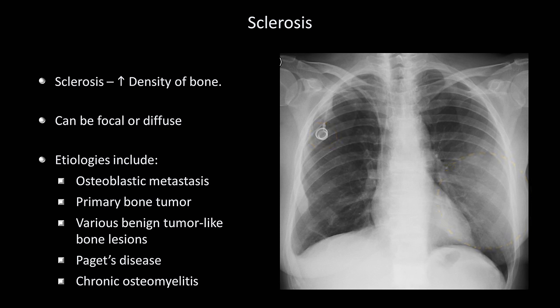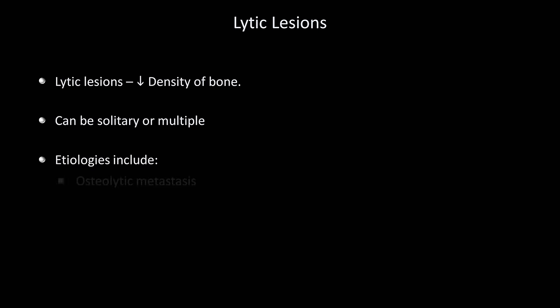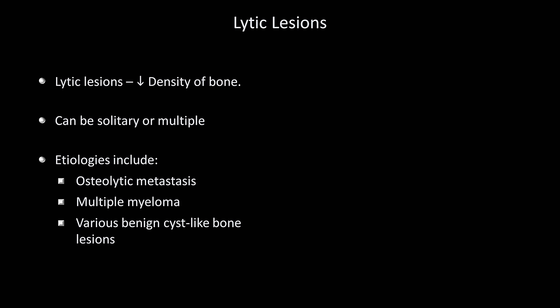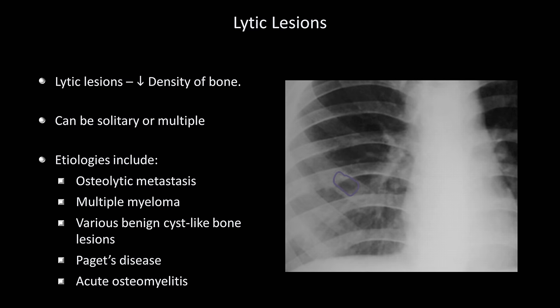This case is a little unusual in that bone mets in breast cancer are usually osteolytic and not osteoblastic, as seen here. Which brings us to lytic lesions — areas of bone where density is lower than normal. They can be solitary or multiple, with etiologies analogous to sclerotic lesions: osteolytic mets, multiple myeloma, various benign cyst-like bone lesions, Paget's disease, and acute osteomyelitis. The differential varies greatly depending upon patient age. Here's an example of a lytic rib lesion, which in this case was due to tuberculosis.